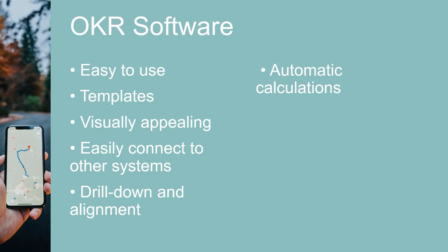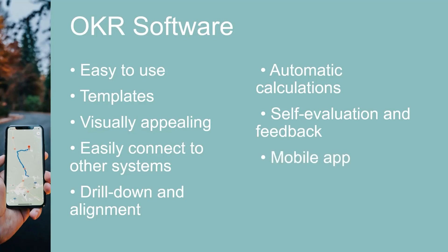Many OKRs can be scored by comparing actual results to targets, and OKR software can automatically make those calculations and report the score. The software makes it easy for people to record their self-evaluations and provide feedback to others. Supervisors have access to the self-assessments of all their staff and departments, and many OKR software applications allow access via a mobile app.